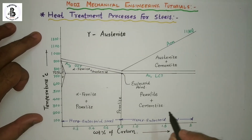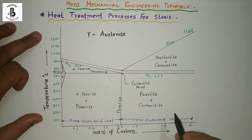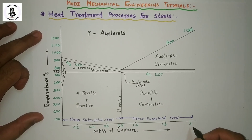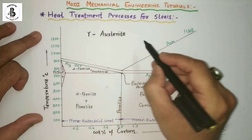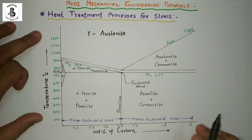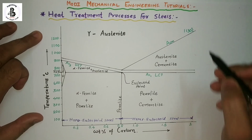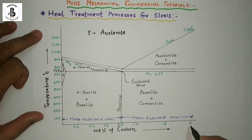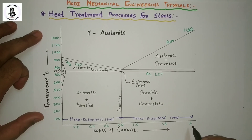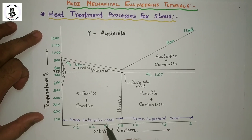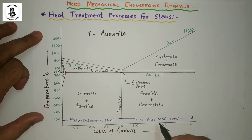Before starting the heat treatment process, there will be a general layout of the heat treatment process chart, which will be related to the iron-carbon diagram for up to 2% carbon present in steels. We are only considering up to the temperature range of 1130°C in the iron-carbon diagram. Steel contains up to 2% carbon with iron, giving us hypo-eutectoid steel, eutectoid steel, and hyper-eutectoid steel.